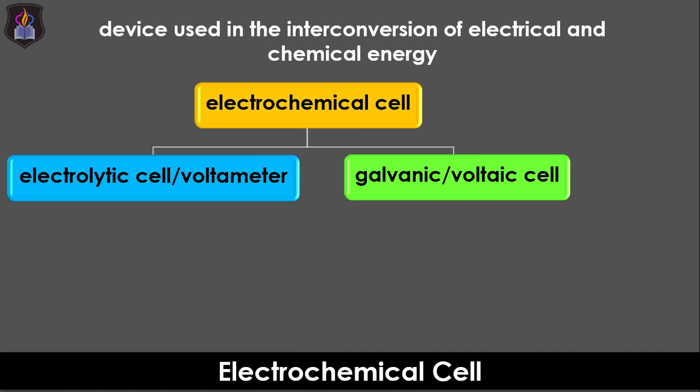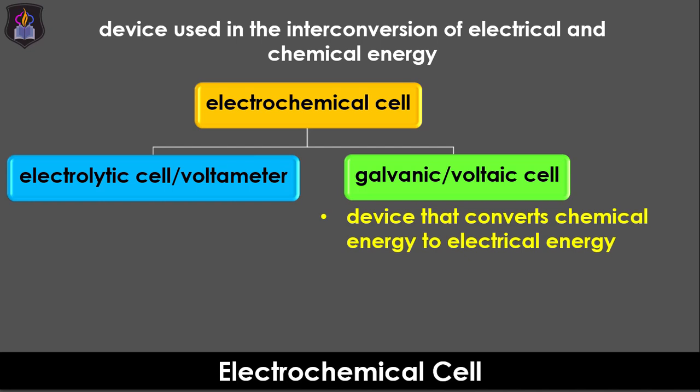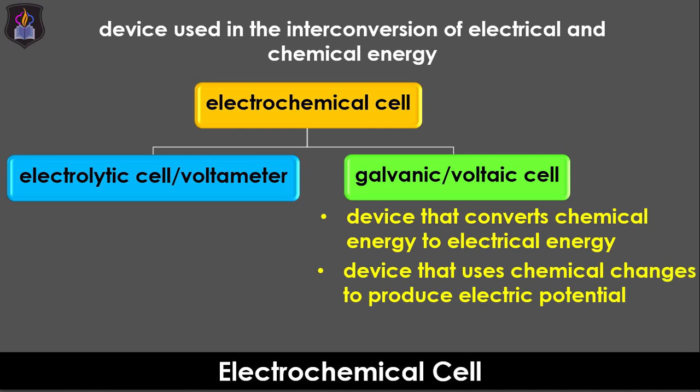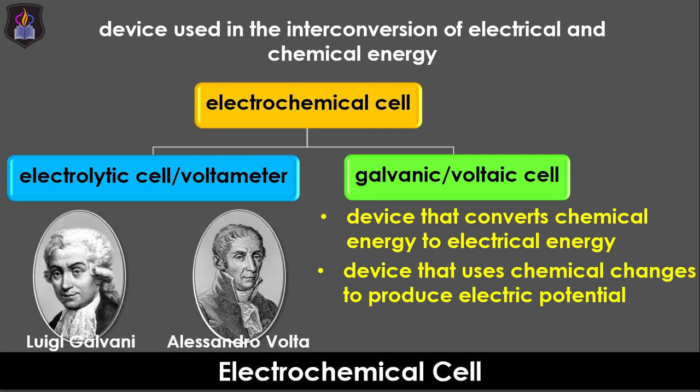A galvanic or voltaic cell is a device that converts chemical energy to electrical energy. It can also be said to be a device that uses chemical changes to produce electricity. It is named after Luigi Galvani and Alessandro Volta, the two scientists who constructed the early versions of the device.